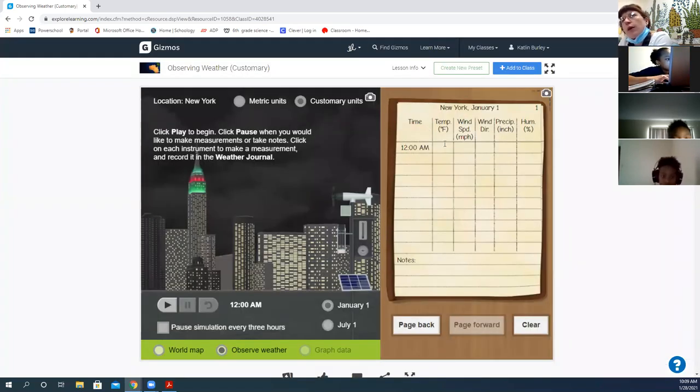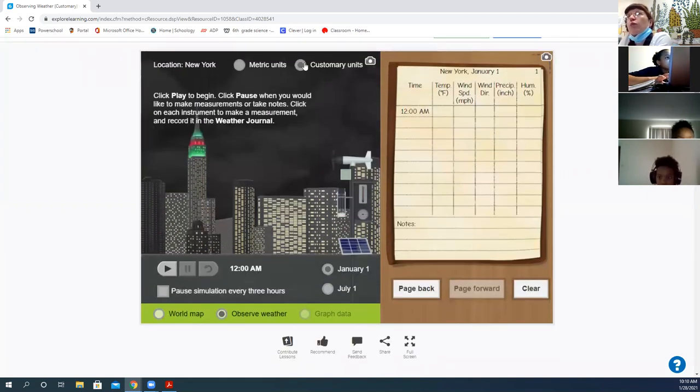The recordings are going to show temperature, wind speed, wind direction, precipitation or the rain gauge, and humidity in a percent. Because that's a percent, what does that really consider? Emerson? Relative humidity, because it's relative to the temperature, right? And I also can note the time. And then you'll see we're in customary units. That's because that's what the United States uses. But I can pause the simulation every three hours. So it's easy for me to take notes.